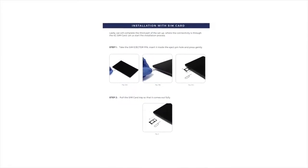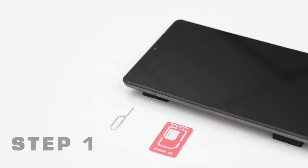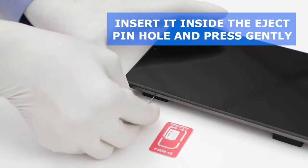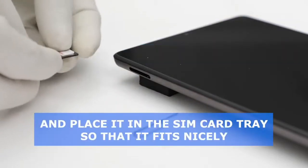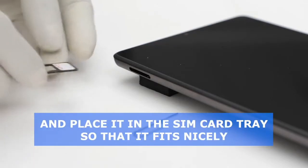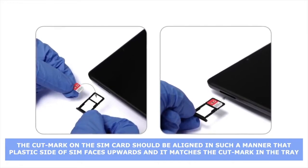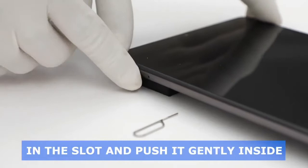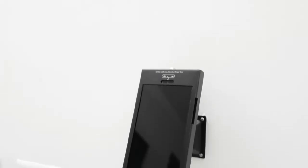Lastly, we will complete the third part of the setup where connectivity is through the 4G SIM card. Let us start the installation process. Step 1: Take the SIM ejector pin, insert it inside the ejected pin hole and press gently. Step 2: Pull the SIM card tray so that it comes out fully. Step 3: Take a nano SIM card and place it in the SIM card tray so that it fits nicely. Note, the cut mark on the SIM card should be aligned in such a manner that the plastic side of the SIM faces upwards and it matches the cut mark in the tray. Step 4: Put the SIM card tray back in the slot and push it gently inside. Repeat step 13 to step 27 as covered earlier in the first part of the setup. Now, we have completed the installation of Kent CAM attendance with 4G SIM.